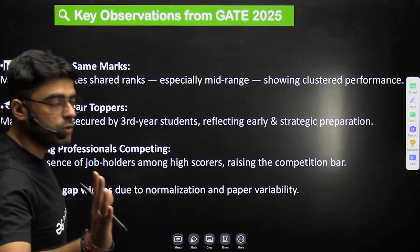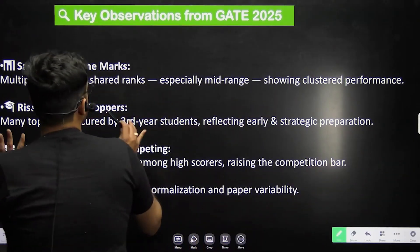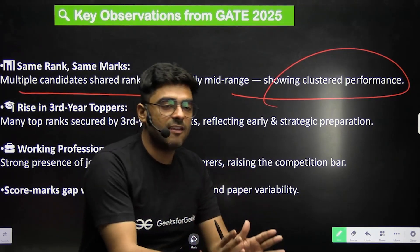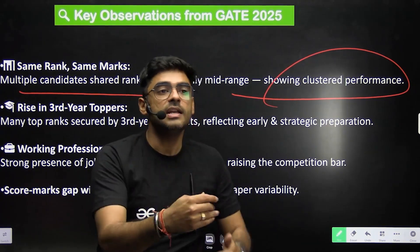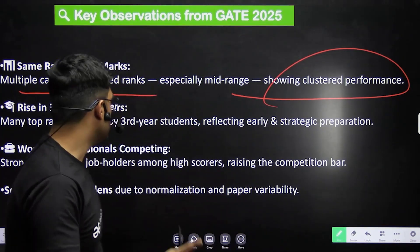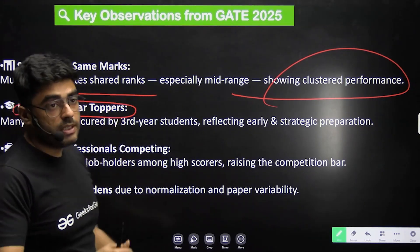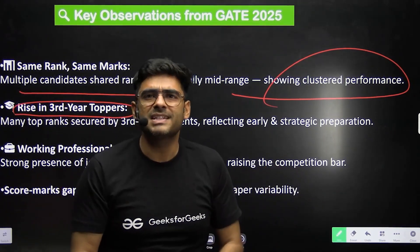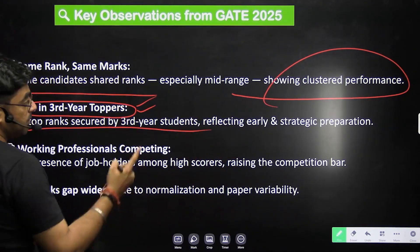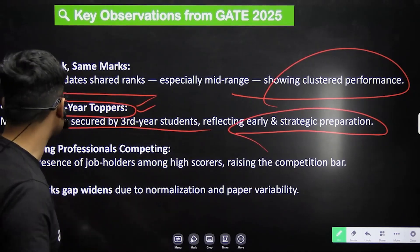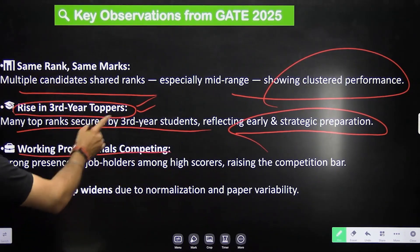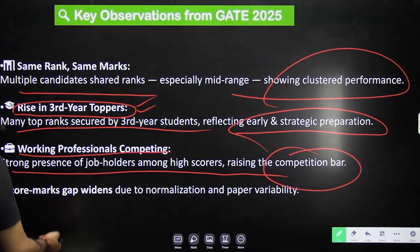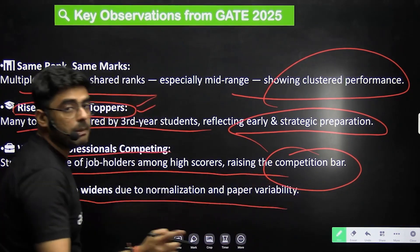Key observations from GATE 2025: multiple candidates shared their ranks, especially in the mid-range where clustered performance was noticed. Persons with the same marks had different scores, and based on those scores they were getting calls from different IITs and NITs. Also, third-year students and toppers are increasing, reflecting early and strategic preparation. Working professionals are also competing strongly with college-going students. The score-marks gap widens due to normalization and paper variability.